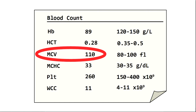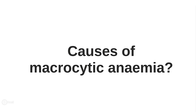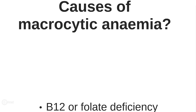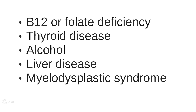The mean cell volume is raised, which means this is a macrocytic anaemia. What are the possible causes of a macrocytic anaemia? B12 or folate deficiency, thyroid disease, alcohol, liver disease, and myelodysplastic syndrome.